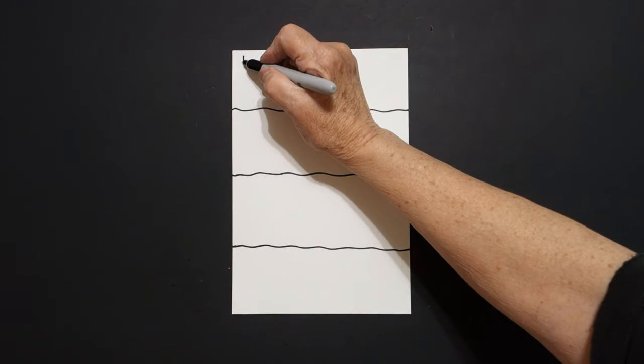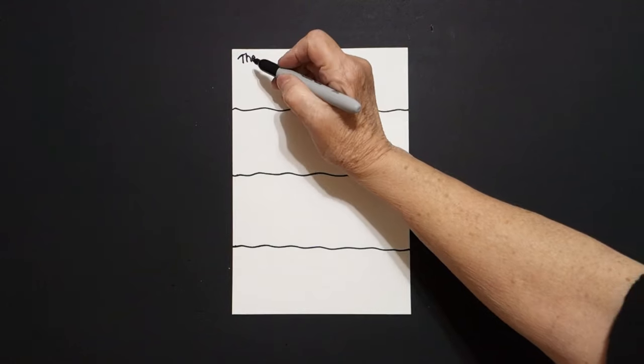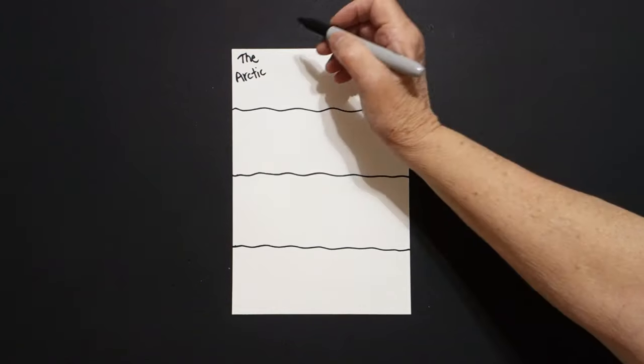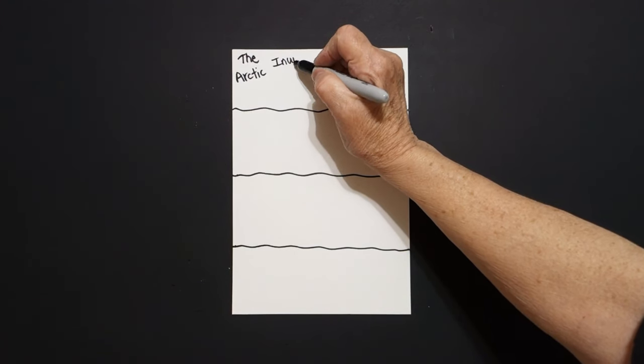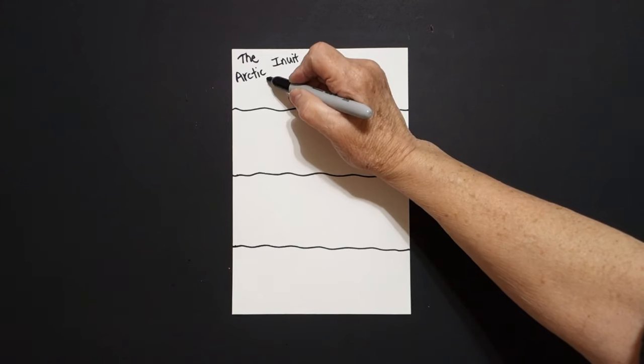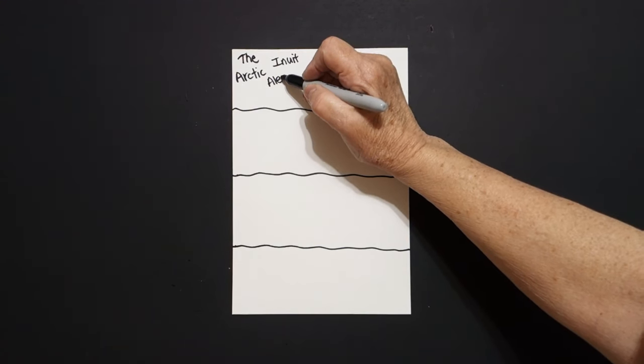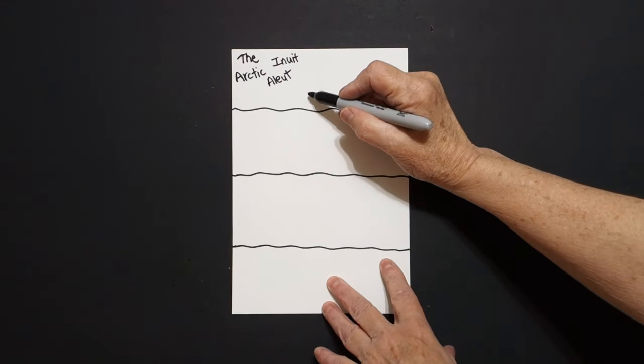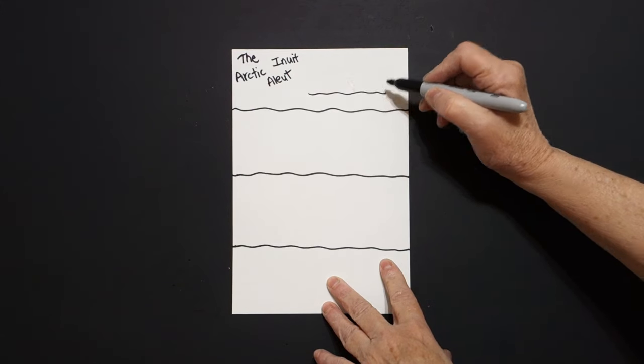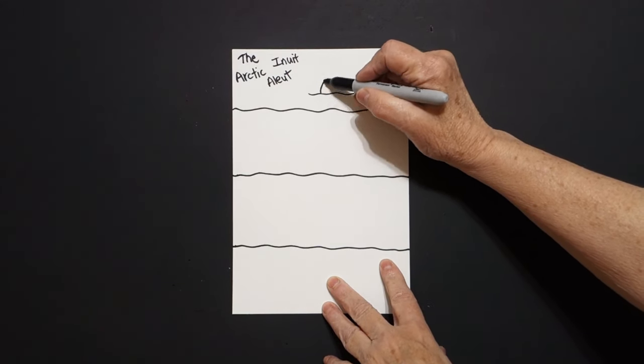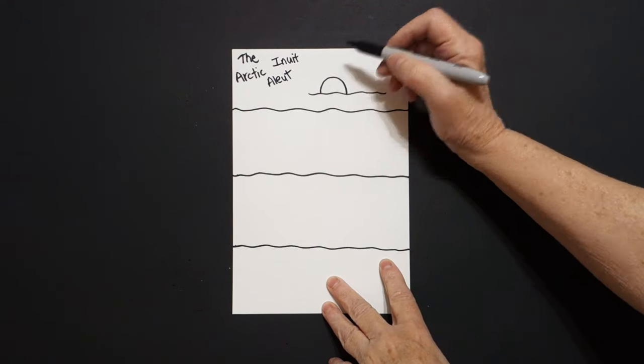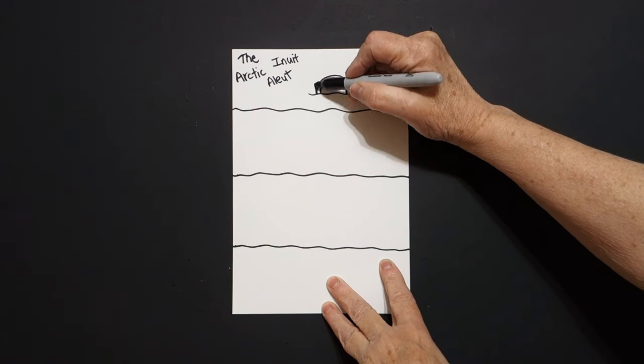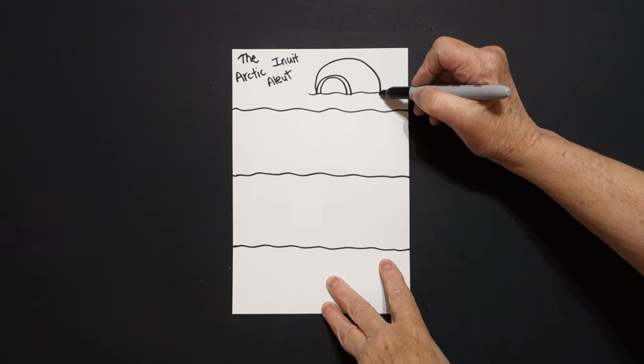Okay, the very first geographic area we're going to do is the Arctic. And the tribes are the Inuit and the Aleuts. And these Native American tribes lived in snow houses. Put a wavy line, curved line, another curved line, and then a bigger curved line, up, over, and down.